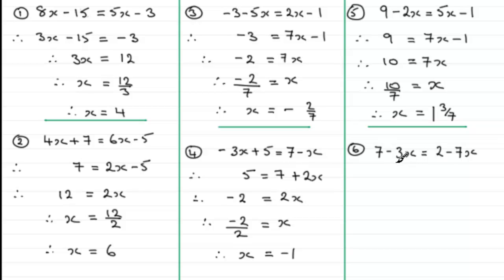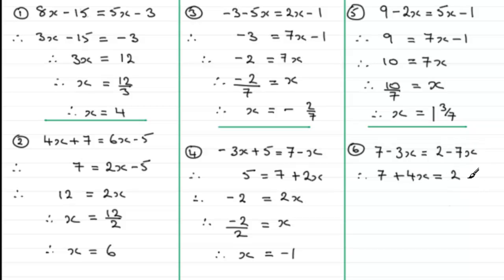For the last one, of the two x terms minus 3x and minus 7x, it's minus 3x that is bigger. So I'm going to group x terms on the left-hand side, adding 7x to both sides to get rid of minus 7x. On the left we have the constant 7 and then minus 3x plus 7x, which is plus 4x. On the right, minus 7x add 7x is zero, leaving just the 2. Next I need to get rid of the constant 7, so I subtract 7 from both sides: 7 take away 7 is zero, leaving 4x.